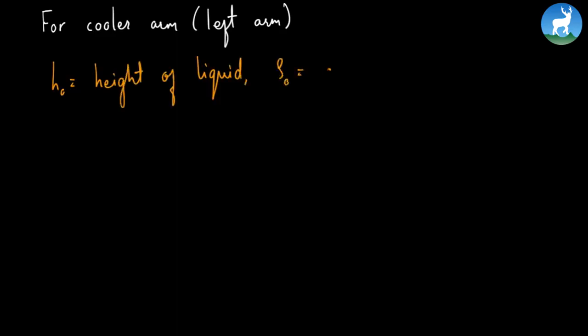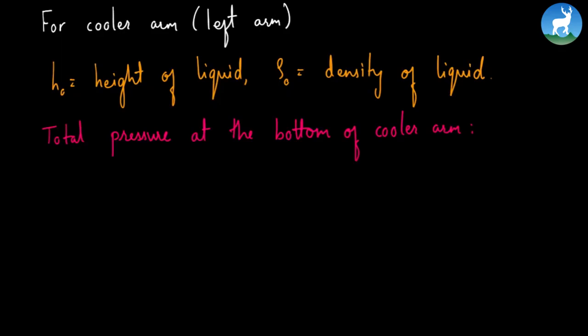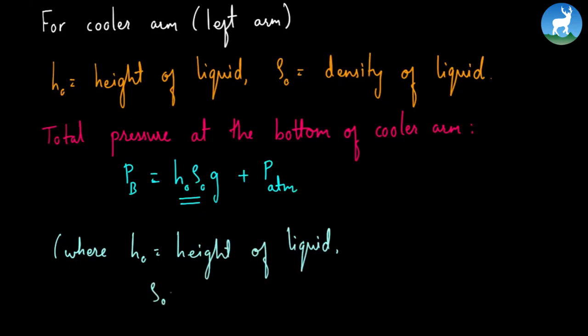For the cooler arm (left arm), the height of liquid is H₀ and density is ρ₀. The total pressure at the bottom of the cooler arm PB equals S₀ρ₀g plus atmospheric pressure P_ATM, where H₀ is the height of liquid and ρ₀ is the density of liquid at zero degree Celsius.